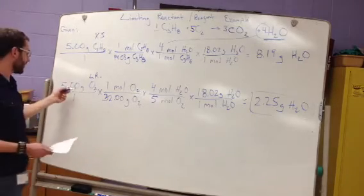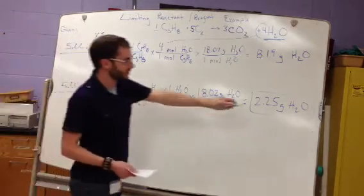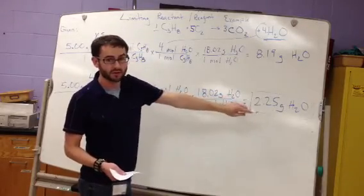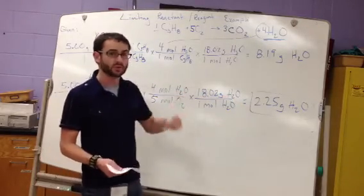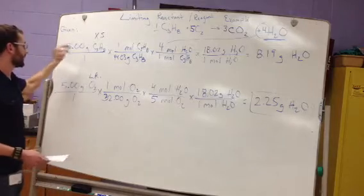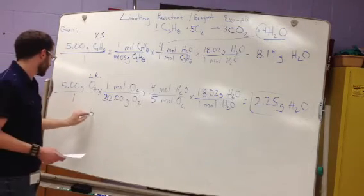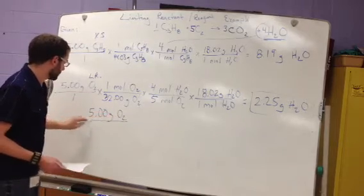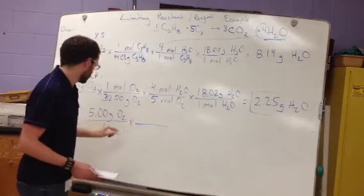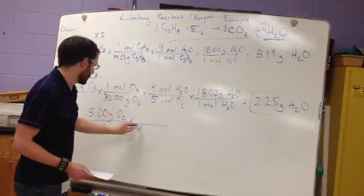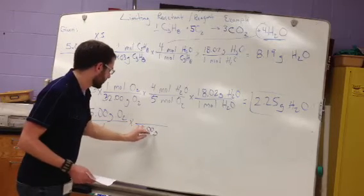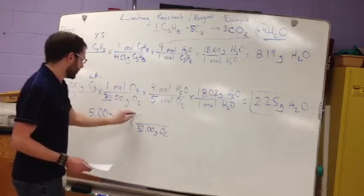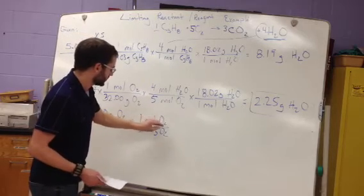Alright. To do that, you start with the limiting reagent. Or you can start with the amount of product that you actually make. Either of these conversions will give you the same number to figuring out this. So we take, let's say, the 5.00 grams of oxygen. Convert it to moles of oxygen. So we're going to do the same thing as above. 32.00 grams O2. One mole O2.